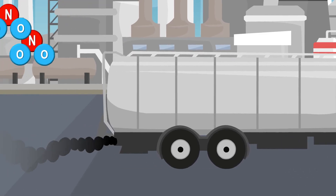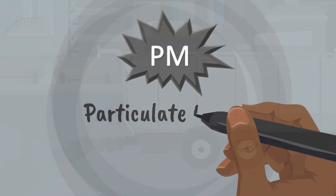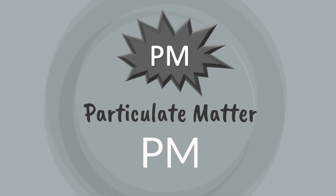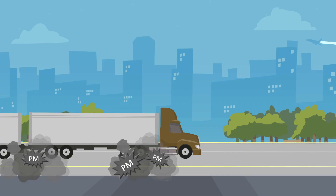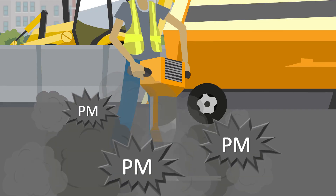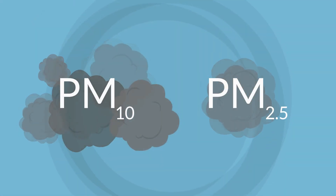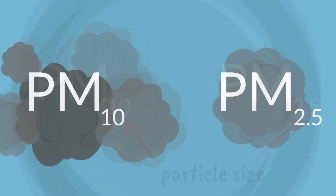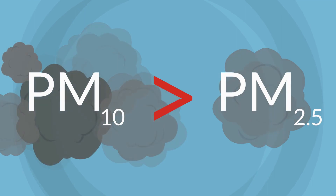Diesel engines are a major source of NO2. Particulate matter, also called PM, is a complicated mixture of solid particles and liquid droplets found in the air. This is one of the most significant air quality pollutants and can be produced from the tiny particles of soot from diesel engines as well as dust generated by other construction activities. They are often referred to as PM10 and PM2.5, with the numbers relating to the particle size.